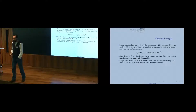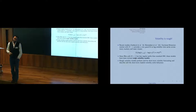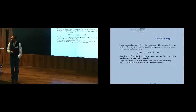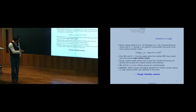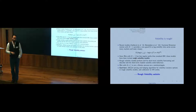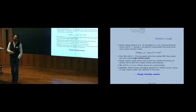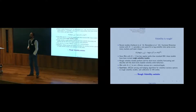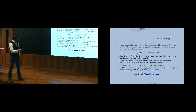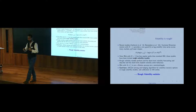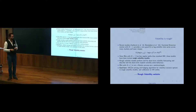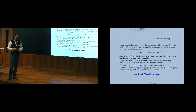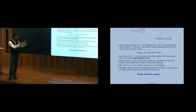They also showed there are very nice statistical properties for forecasting, which I will not talk about here. If you want more details, there's a very nice website called the Rough Volatility Network, which gathers all the people working on this topic from many different points of view — statistics, pricing, machine learning — and collects all papers, conferences, and seminars. Feel free to have a look at it.